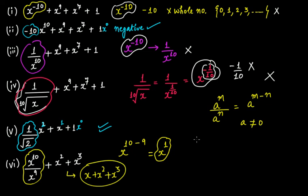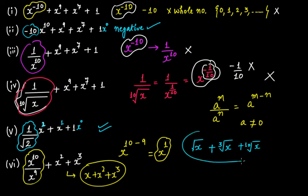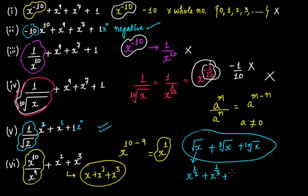Now imagine if it was something like this: square root of x, plus cube root of x, plus 10th root of x. Is this a polynomial? No. Why? Because the square root of x means x to the power of 1 by 2, cube root of x means x raised to the power of 1 by 3, and 10th root of x means x raised to the power of 1 by 10. These are not whole numbers — that is why this is not a polynomial.